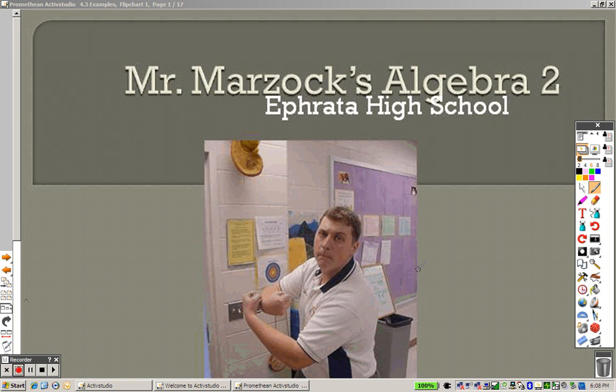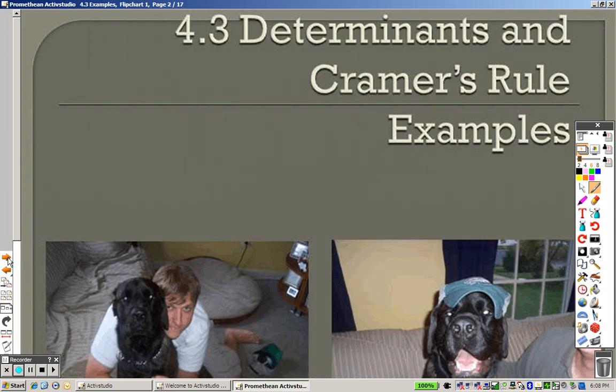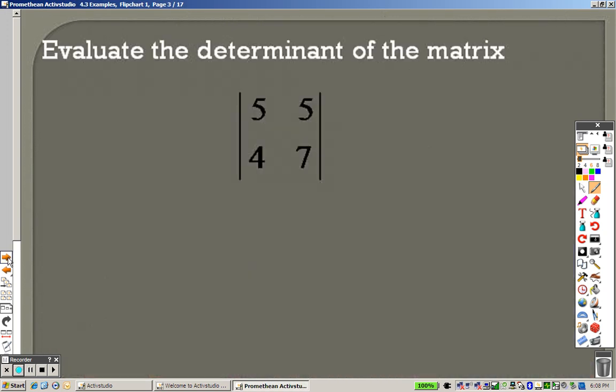Okay, 4.3 now, and 4.3 is about us using determinants and Kramer's rule. So let's take a look at the first example.